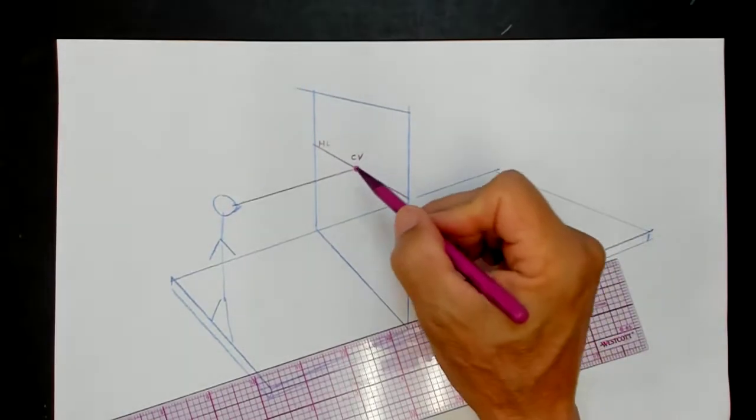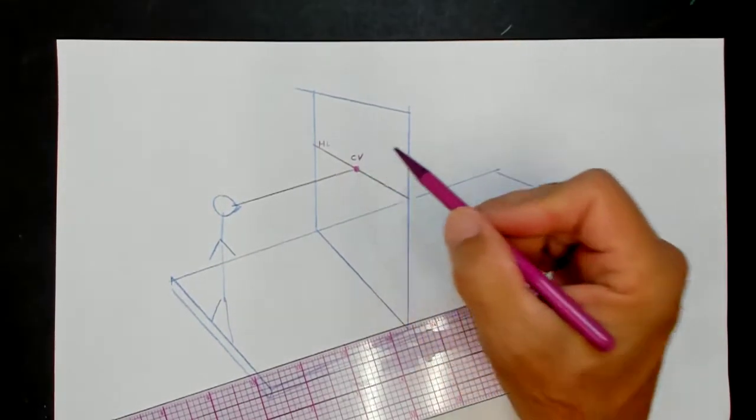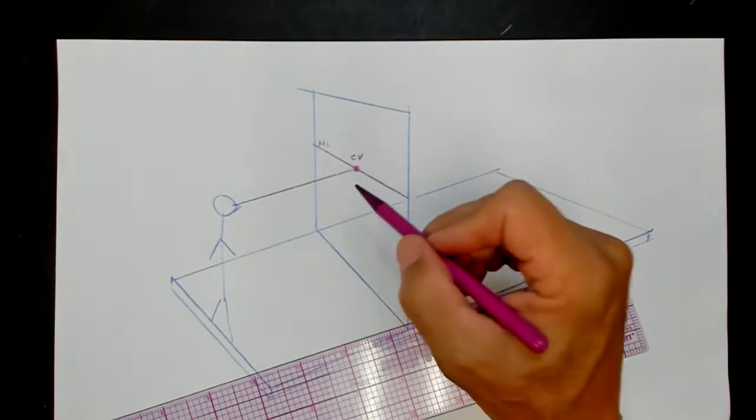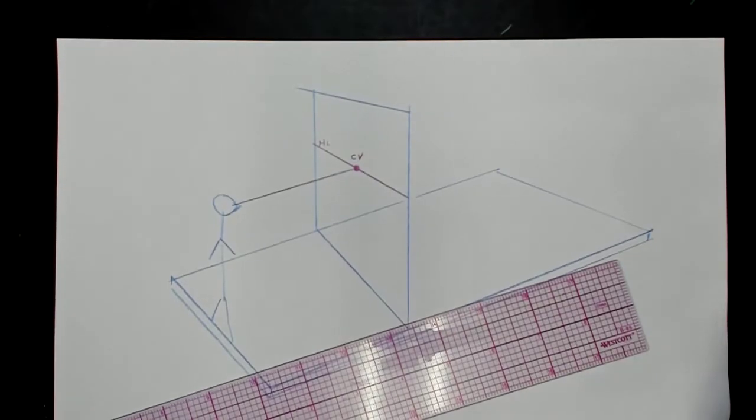If you make this a vanishing point, then it is a one-point perspective vanishing point. You could have multiple vanishing points, an unlimited number of vanishing points, but you can only have one one-point perspective vanishing point, and that is right at the center of vision.